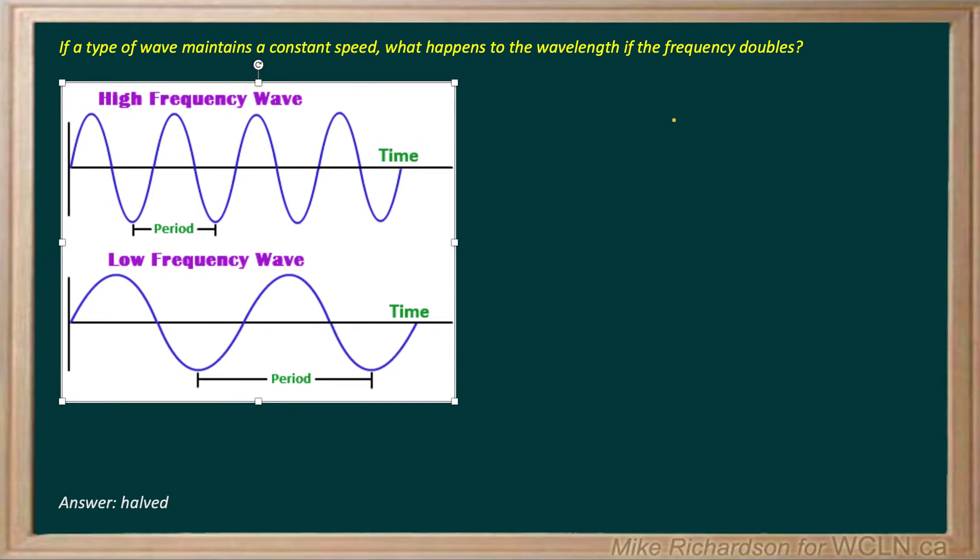If a wave maintains a constant speed, what happens to the wavelength if the frequency doubles? So I've got a picture below, one with a long wavelength and one with a short wavelength.